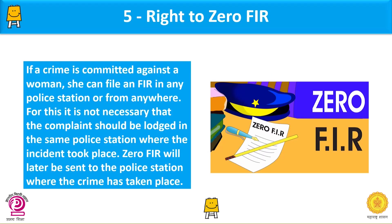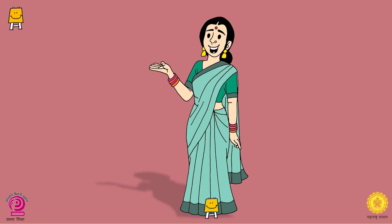Right to Zero FIR: If a crime is committed against a woman, she can file an FIR in any police station or from anywhere. It is not necessary that the complaint should be lodged in the same police station where the incident took place. The Zero FIR will later be sent to the police station where the crime took place. We hope you learned about women's rights after watching this video. Thank you, and we hope to see you again soon with more informative videos.